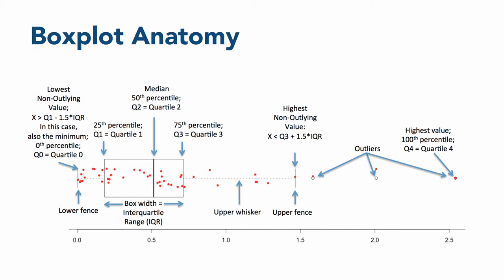At the far left of the chart is a small vertical line, also called a fence, that marks the lowest non-outlying scores in the distribution. In this particular case, there aren't any low outliers, so this fence also marks the minimum score, which can be called the 0th percentile, or Q0 for quartile zero, or the beginning of the first quarter of scores.